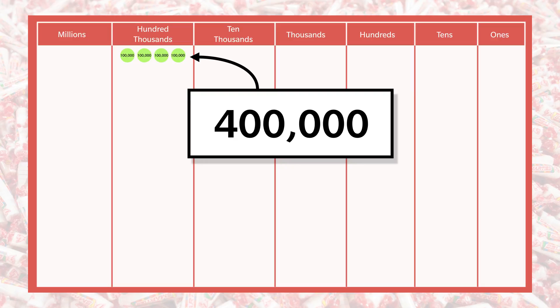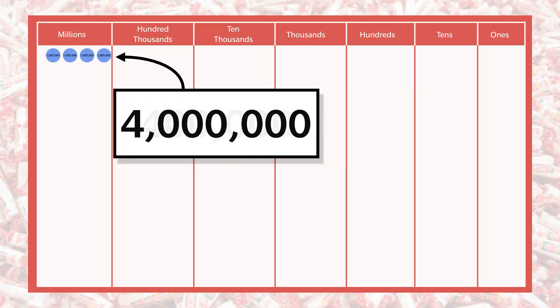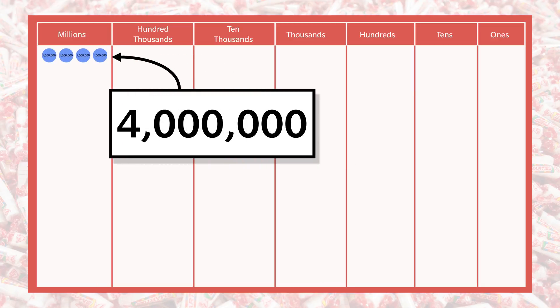Do you notice a pattern? From here, moving one more place value to the left gives us 10 times more than 400,000: 4,000,000.